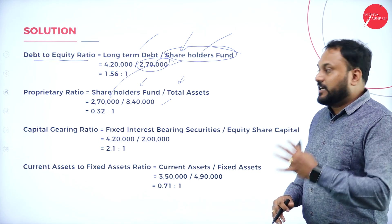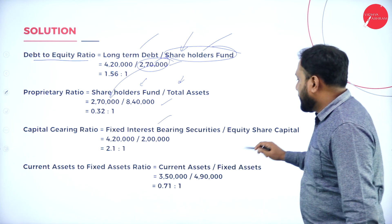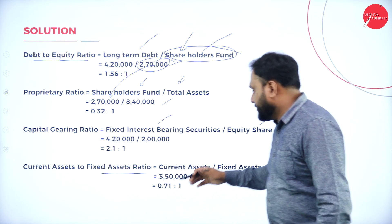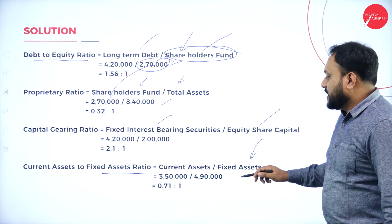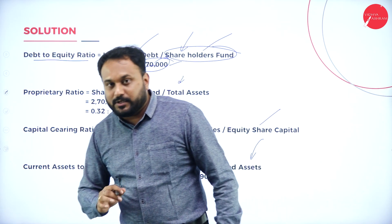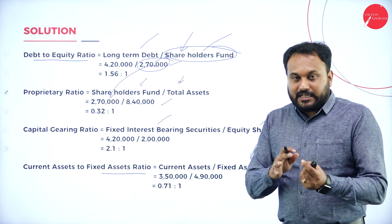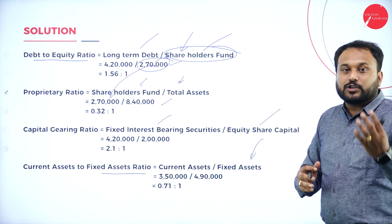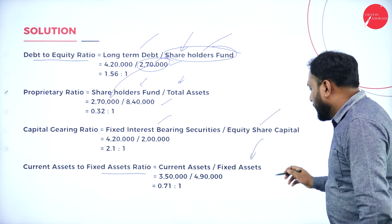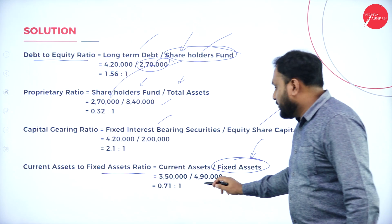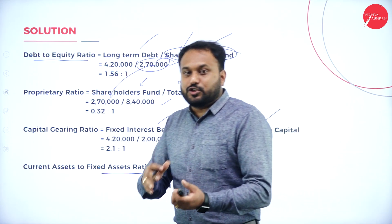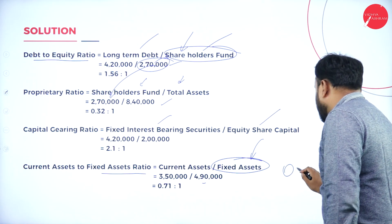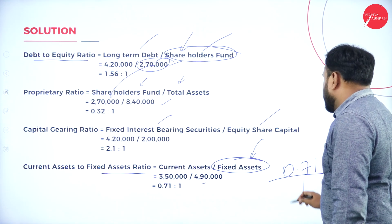Capital Gearing ratio is Fixed Interest Bearing Securities divided by Equity Share Capital. The last ratio is Current Assets to Fixed Assets ratio — Current Assets divided by Fixed Assets. Fixed Assets are calculated as Total Assets minus Current Assets, which gives 4,90,000. So the ratio comes to 0.71 is to 1.